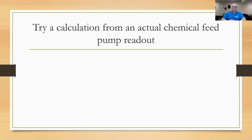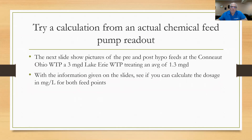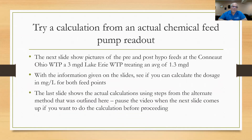Let's try a calculation for an actual chemical feed pump readout. On the next slide there will be pictures of a pre and post hypo feed at the Connie Ohio water treatment plant, which is a 3 MGD plant treating an average of 1.3 MGD. See if you can calculate the dosage in milligrams per liter for both feed points. The last slide shows the actual calculation using steps from the alternate method outlined here. When you see the next slide, pause the video, try to calculate it yourself, then start it up again to see the answers.